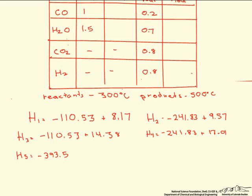Our H5 is minus 393.5, that's the heat of formation of CO2. And then we look it up and find that to take it to 500 degrees is 21.35 kilojoules per mole.